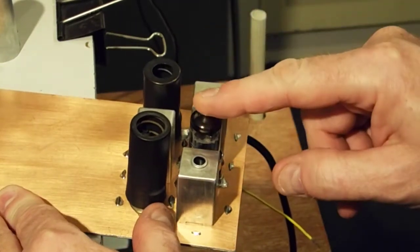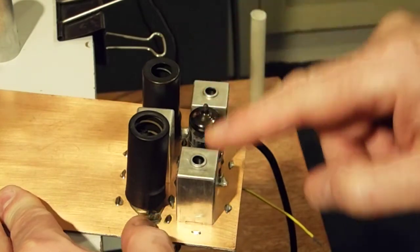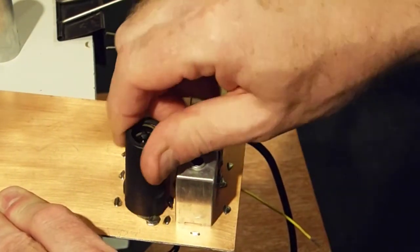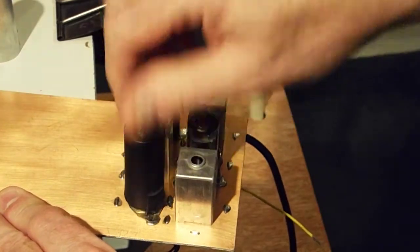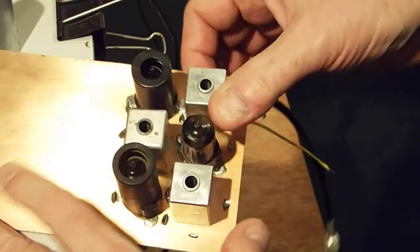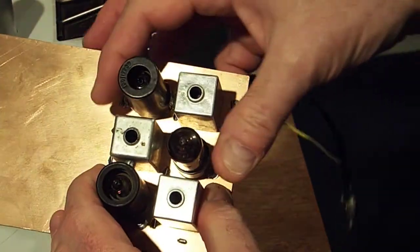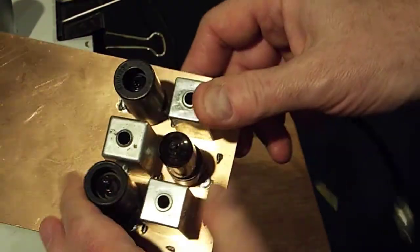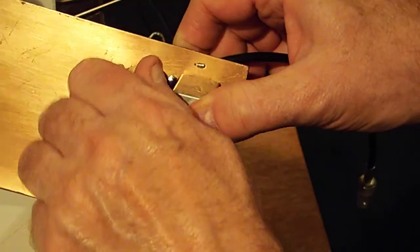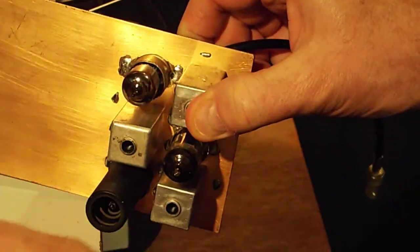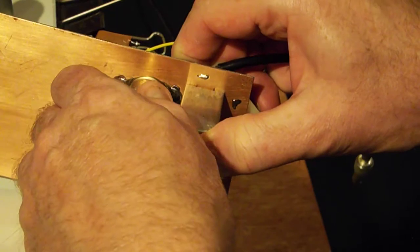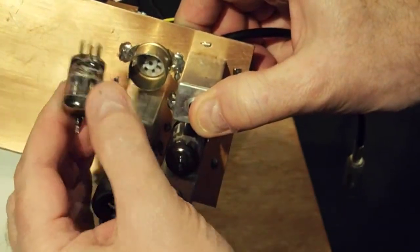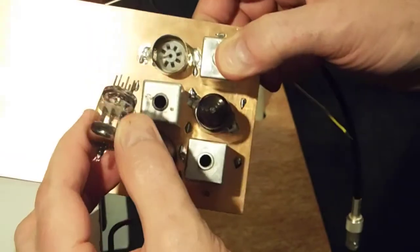So that provides first stage gain to a second transformer or IF stage to another EF-91, and then the output from that is a final coil which feeds this, which is in fact a CV-4007, which is a shortened and again military version of the EF-91.